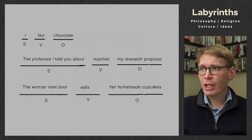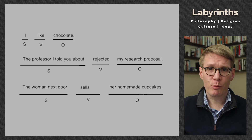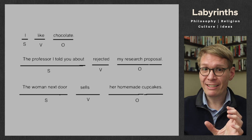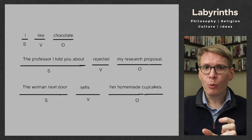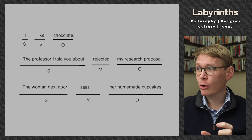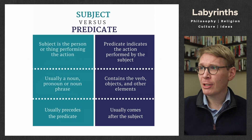Subject, verb, and object do not have to be single words. 'I like chocolate' has one word for each. But in the second example, 'the professor I told you about rejected my research proposal,' the entire phrase 'the professor I told you about' is the subject, 'rejected' is the verb, and 'my research proposal' is the object. Same case with 'the woman next door sells her homemade pancakes' — subject is 'the woman next door,' verb is 'sells,' object is 'her homemade pancakes.' We're able to look at any sentence and identify which part corresponds to which element.